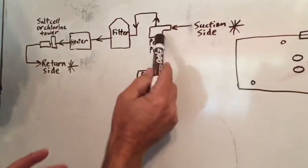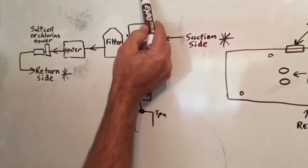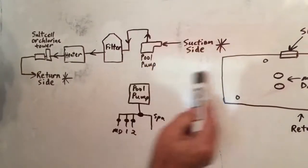It comes in from the front of the pump and out the top of the pump. Any pump that you look at, even a little booster pump, it always comes in the front of the pump and then out the top. And this is the suction side.